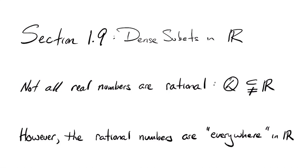To get started, looking at the first slide, a couple of palatable statements: not every real number is a rational number. We haven't given a formal proof of this in this course yet, but perhaps in Math 240, using ideas from number theory, you proved that the square root of two is a real number that is not rational. The rational numbers are a proper subset — I'm emphasizing that with the subset symbol with 'not equals' — there are real numbers that are not rational.